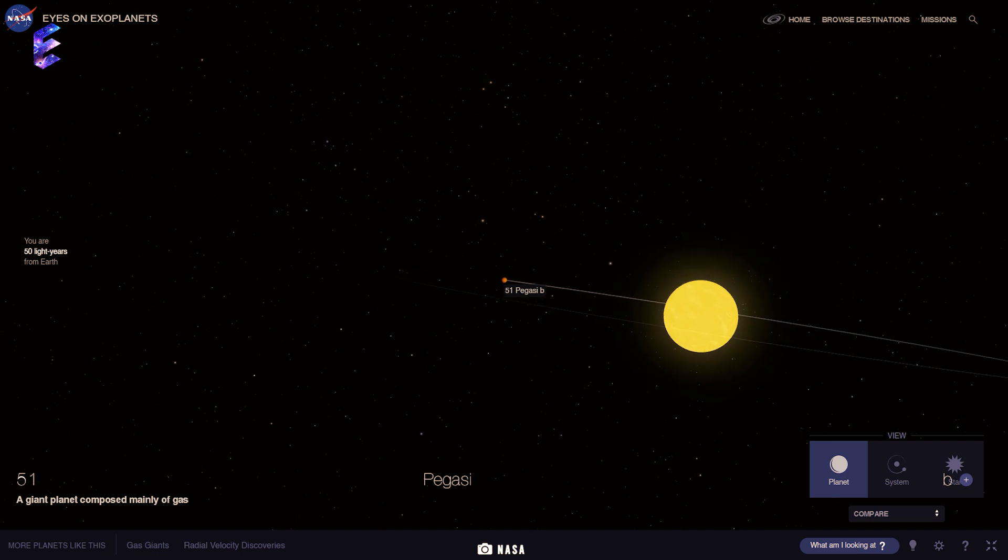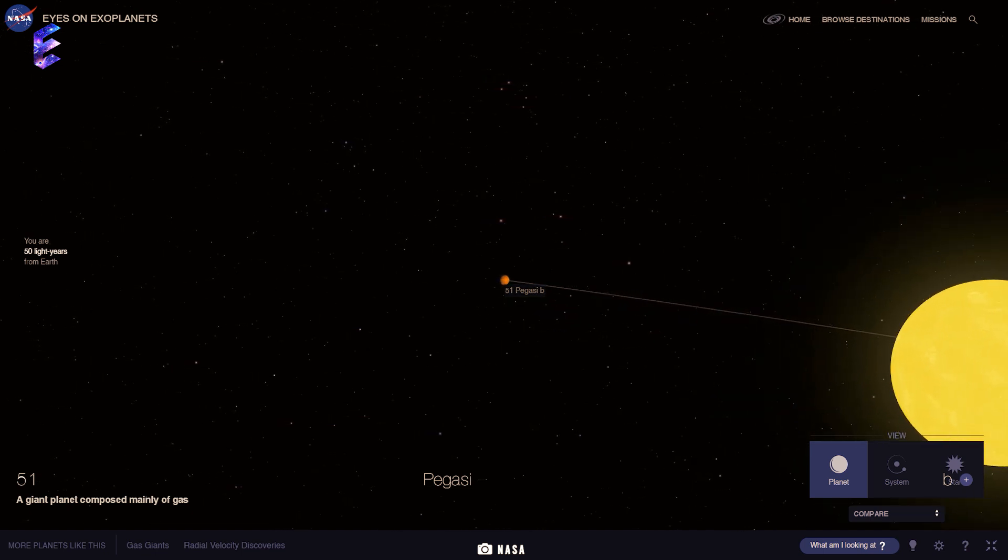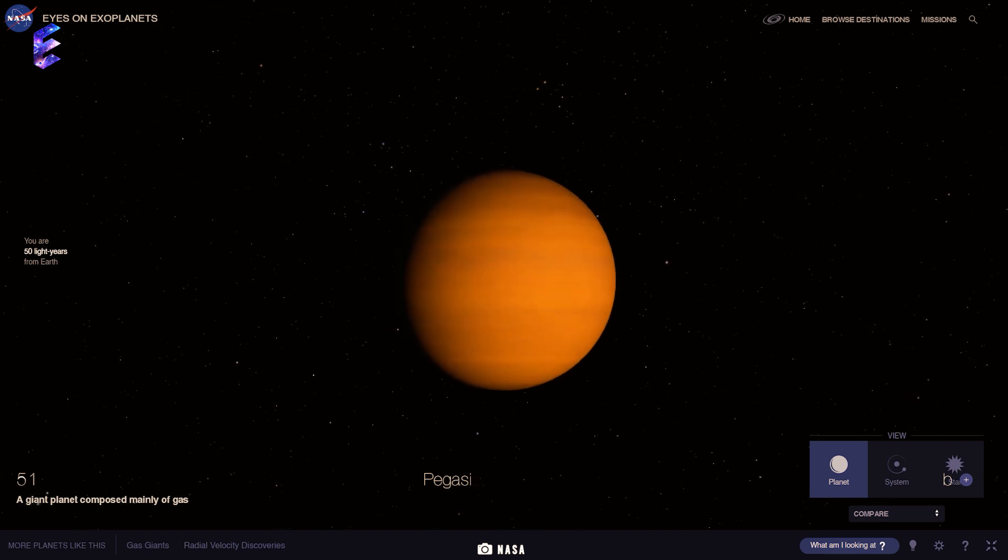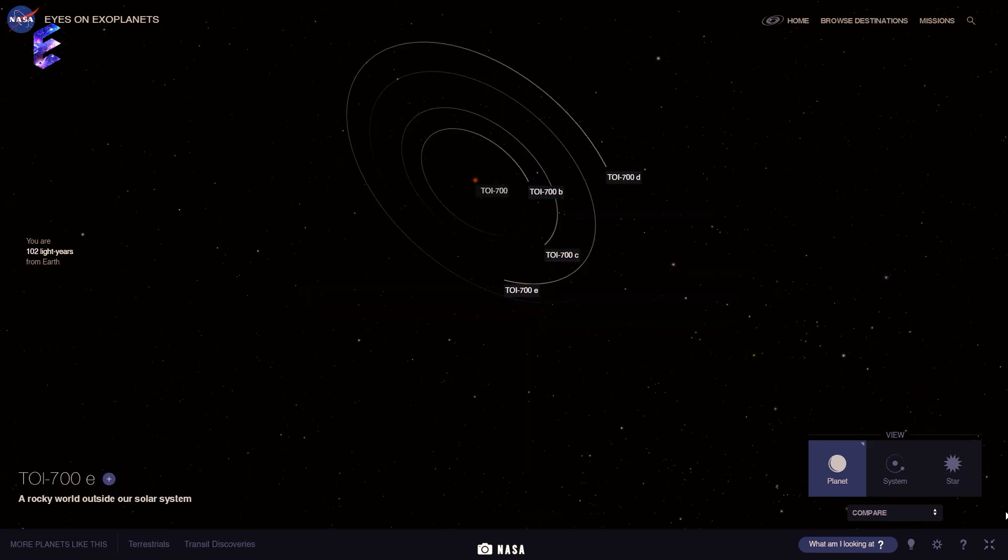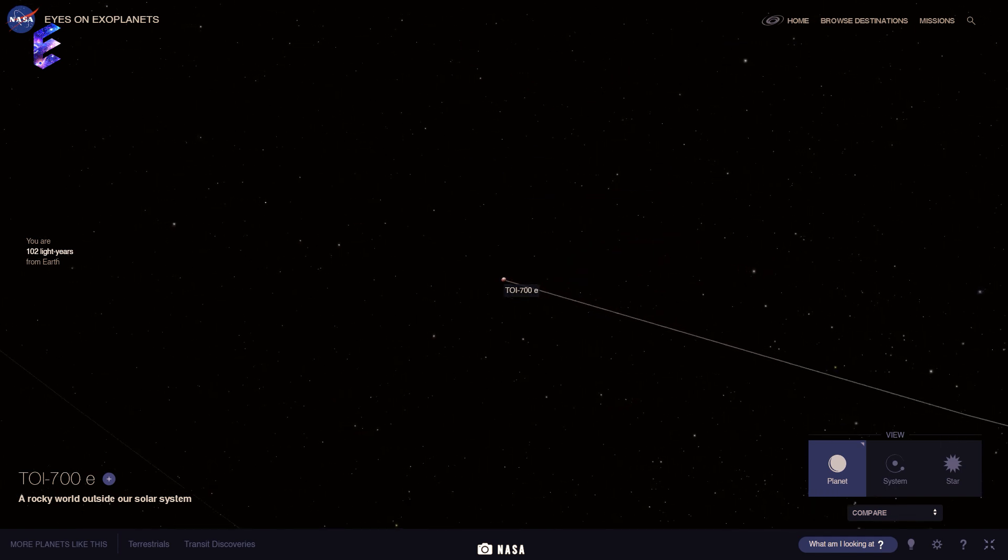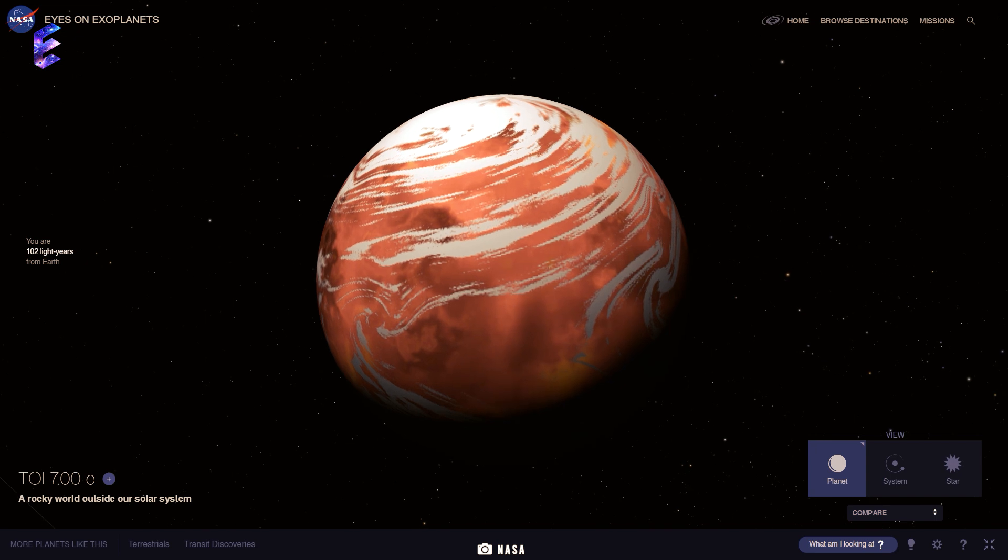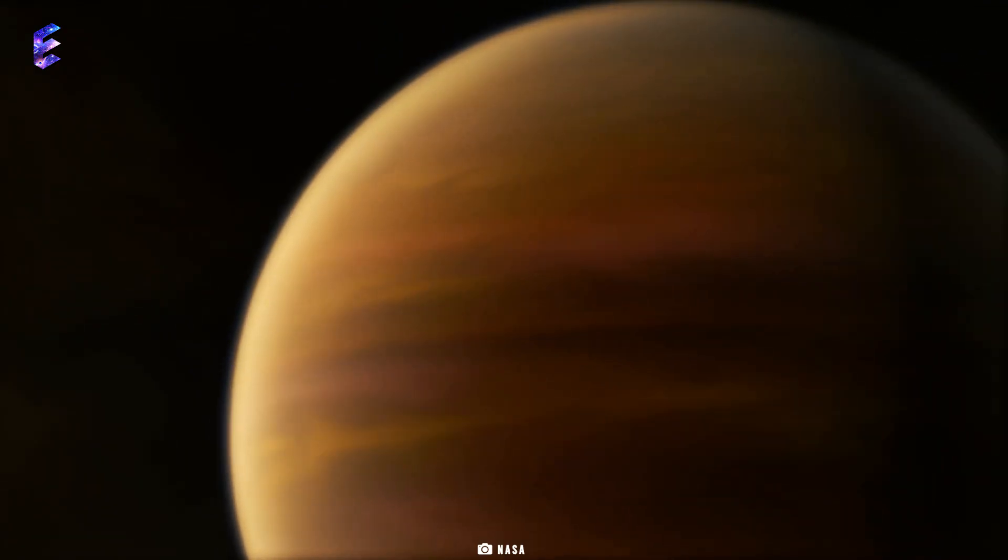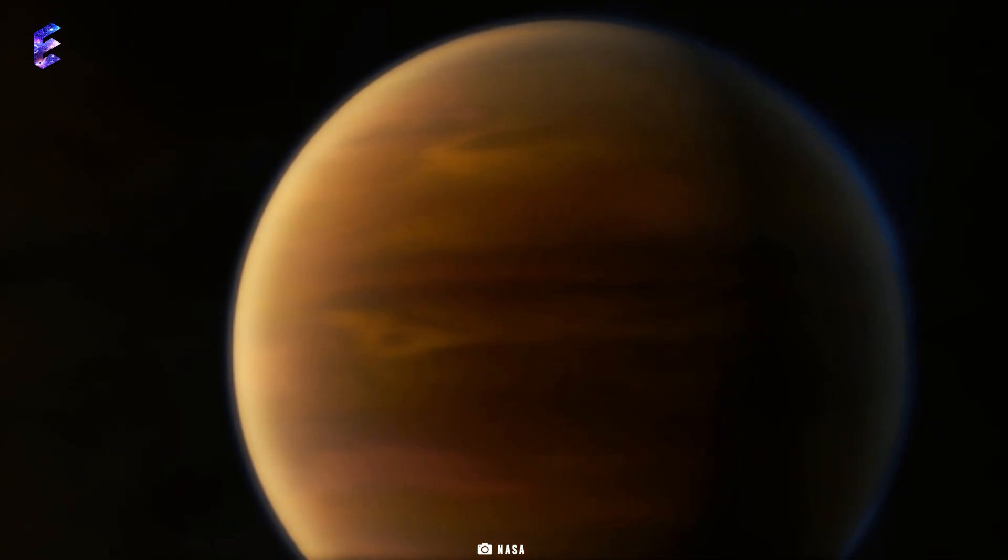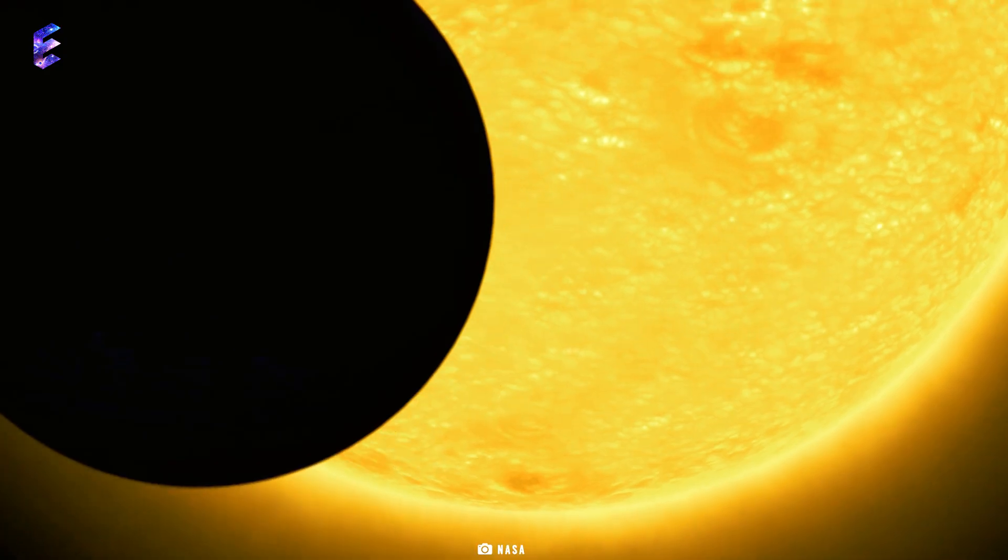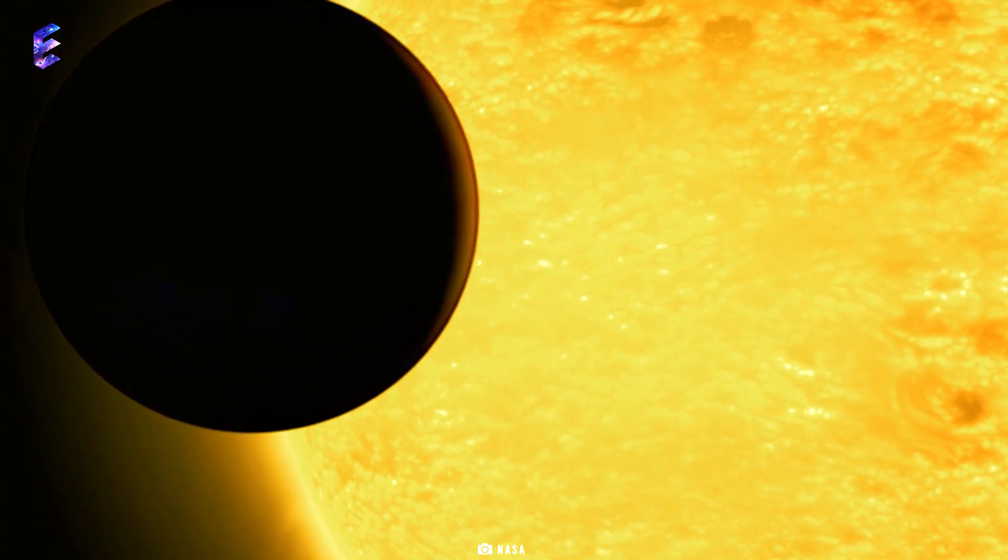The first hot Jupiter exoplanet to be discovered was the 51 Pegasi b in 1995 and is situated 50 light years away from Earth. The latest terrestrial exoplanet to join the list is TOI 700e, a rocky planet situated 102 light years away. These exoplanets are often also referred to as free-floating or rogue planets. Believe it or not, it is more likely that there might be over a trillion exoplanets in our Milky Way galaxy alone.